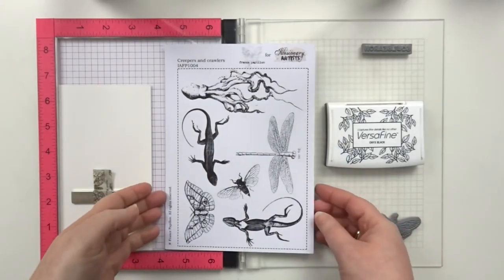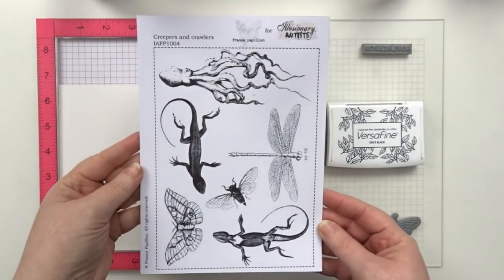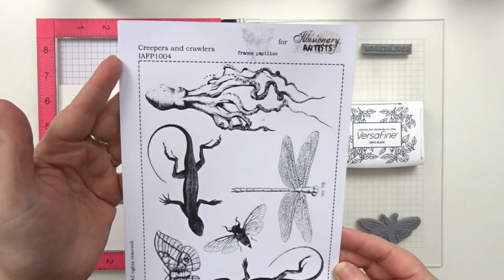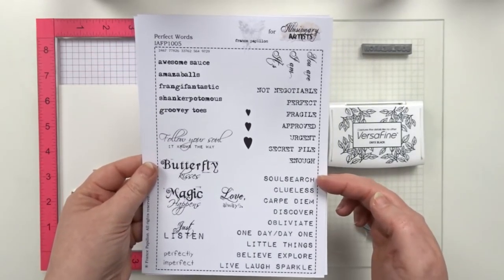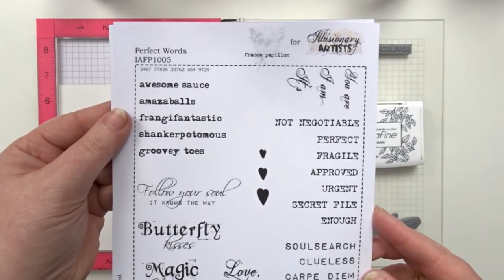The next step is some stamping. I'm going for the bee on the Creepers and Crawlers set from Illusionary Artists and also the word Soul Search from the Perfect Words set.